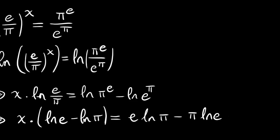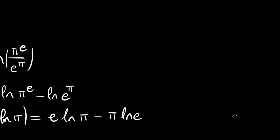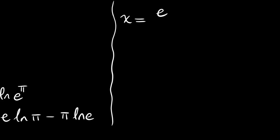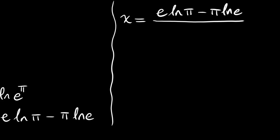So let's divide both sides by ln(e) minus ln(pi). We will have x equals e times ln(pi) minus pi times ln(e), all divided by ln(e) minus ln(pi).